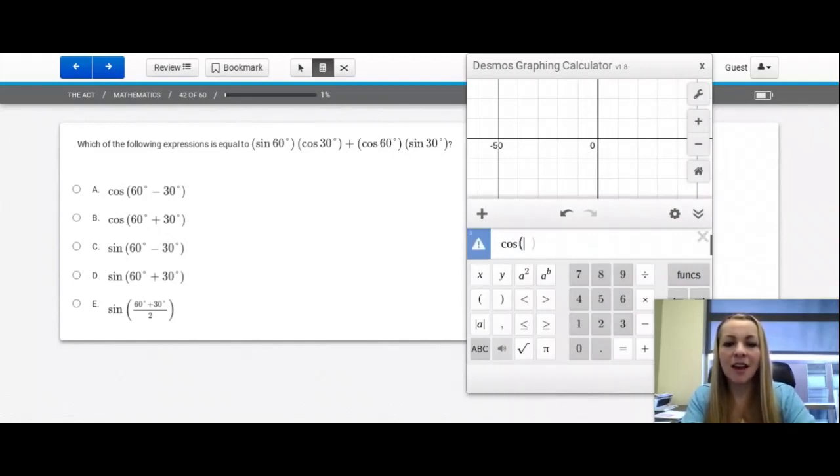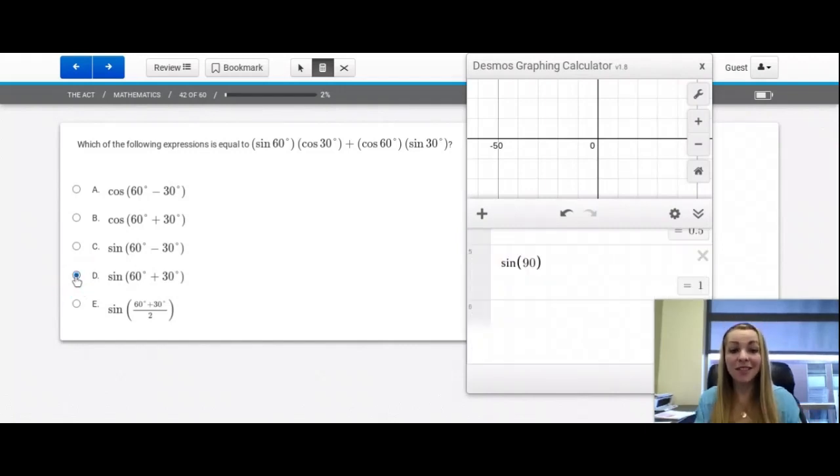We're getting an answer of one here. So we have to figure out which one of these is equal to one. And you don't have to know anything about the sine or the cosine of any angle measure. Let's start at the top. Cosine of 60 minus 30. And I'm just going to simplify that in my head to 30. That's 0.866. Not that. Let's do the cosine of 90, because that's 60 plus 30. Option B, zero. Not option B. Sine of 60 minus 30, which is 30, negative 0.5. That's not correct. The sine of 60 plus 30 is 90. And that gets me to 1. And I'm going to stop there because I want to save time. So this is option D.